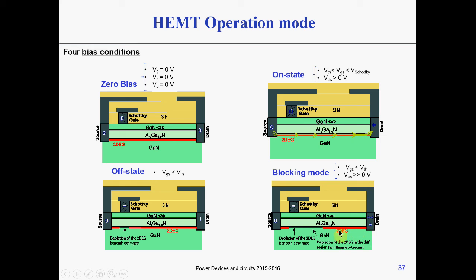What happens in blocking mode is that the 2DEG gets depleted from the gate into the drain as you increase the drain bias. All the charge is confined in the 2DEG. So to switch it off — to deplete it and form the channel — everything is extremely fast. It doesn't involve any injection or removal of carriers in a depletion region. It's an extremely fast switching device.